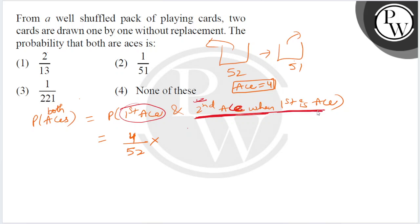When first ace has come, from 52 cards you drew one ace, so how many aces remain? Three aces remain here. There were four, you drew one ace and 51 remain, so this event will be 3 by 51.